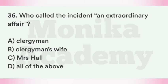Question 36: Who called the incident an extraordinary affair? Option A: Clergyman. Option B: Clergyman's wife. Option C: Mrs. Hall. Option D: All of the above. The correct answer is A, clergyman — जब clergyman के घर पे चोरी हुई, तो वो बहुत shocked था क्योंकि दोनों घर पर मौजूद थे फिर भी चोरी हो गई, इसलिए उसने इसे an extraordinary affair कहा.